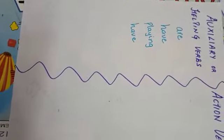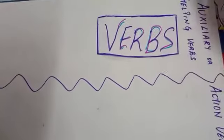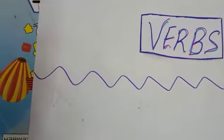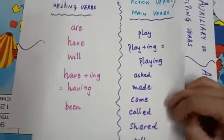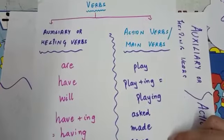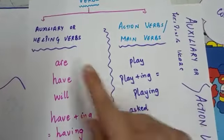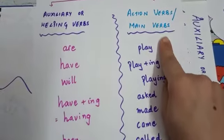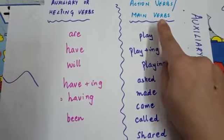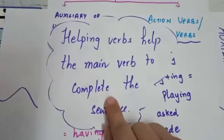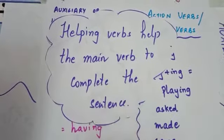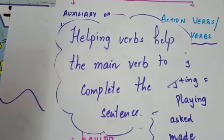So those words — we are talking about verbs here. We are talking about the two main kinds of verbs. We are talking about auxiliary verbs and action verbs. Auxiliary verbs are the helping verbs — they help the main verb to complete the sentence.